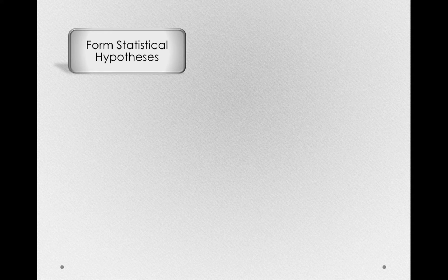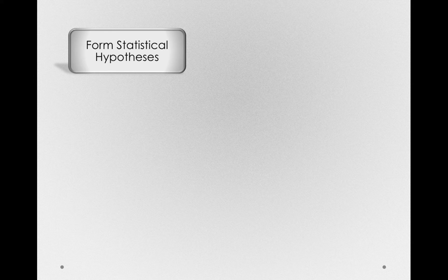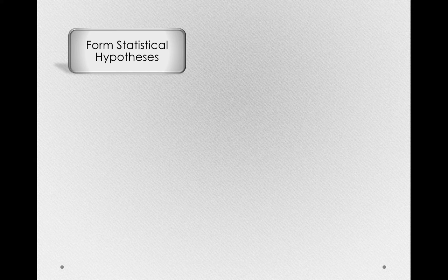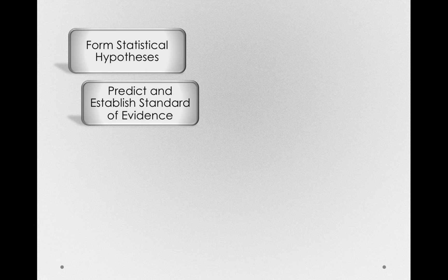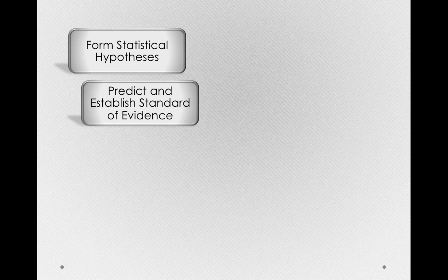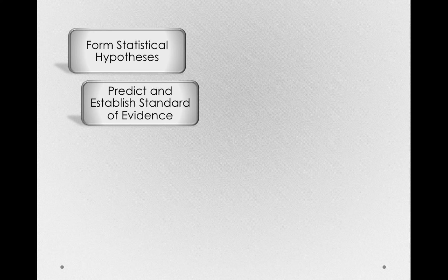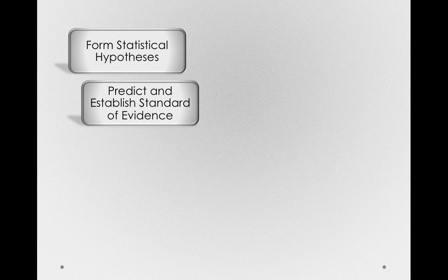Hypothesis tests can be laid out in several different steps. We're going to lay it out in four for this module. First, we always form a statistical hypothesis. In fact, we're going to have multiple hypotheses and we're going to decide between competing ones. Next, we're going to make predictions about what we should obtain and establish a standard of evidence. This is a very important step. We must establish what our standard of evidence is before we see data.